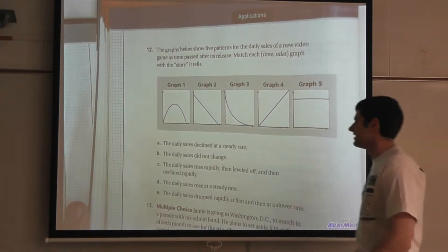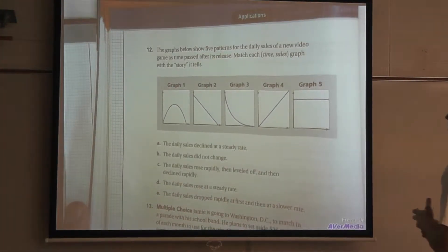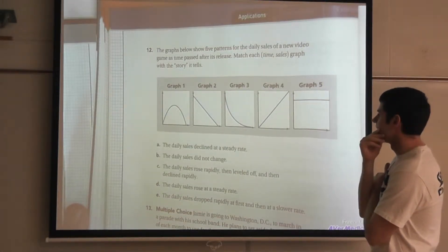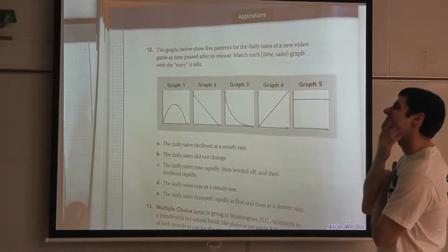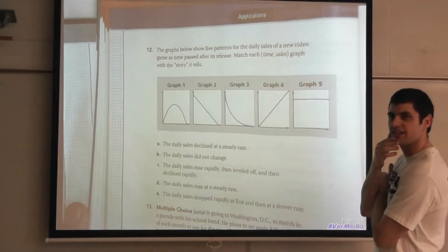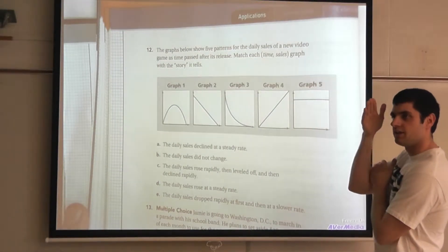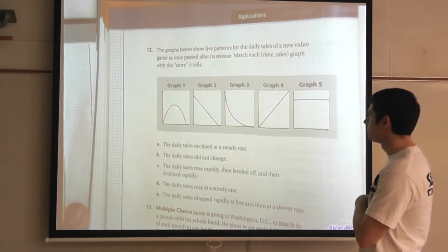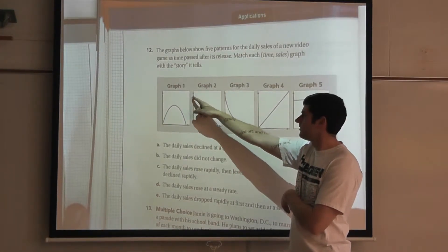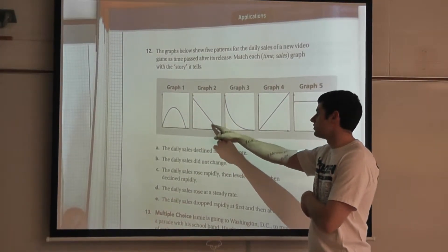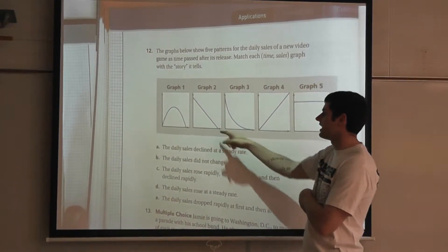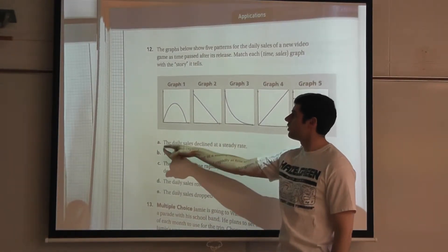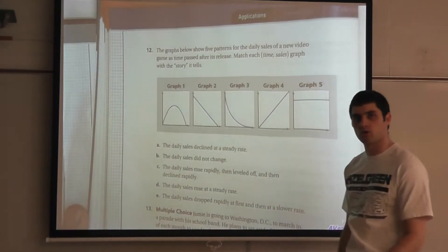Question A says the daily sales declined at a steady rate. So I'm looking at the sales here of video games. How can they decline at a steady rate? Well, steady means it goes the same each time and decline means it's going down. So graph 2 would be correct. If I look at graph 2, this goes steady. It starts up high and it declines, it goes down. That tells me that the daily sales declined at a steady rate. So A would match with graph 2.